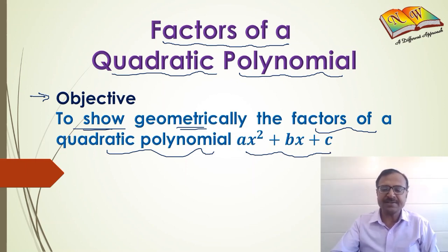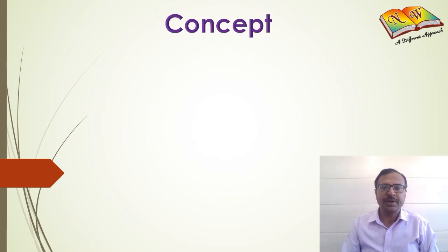Let us study the concept in hand first. A quadratic polynomial, the general representation is ax square plus bx plus c. And there are conditions associated with this standard form. The coefficient of x square, a, cannot be 0 and a, b, and c, they are all real numbers.